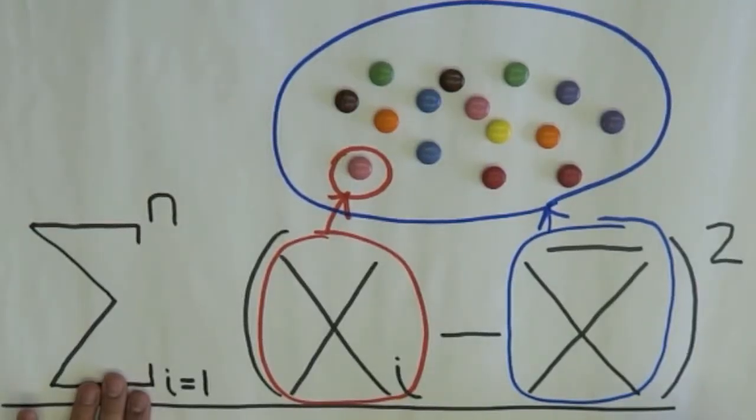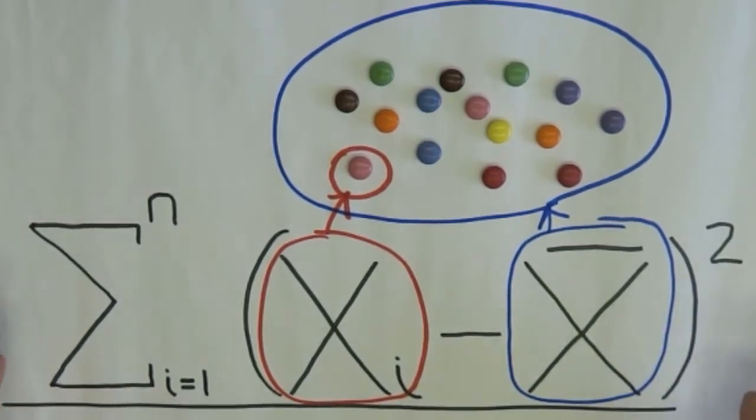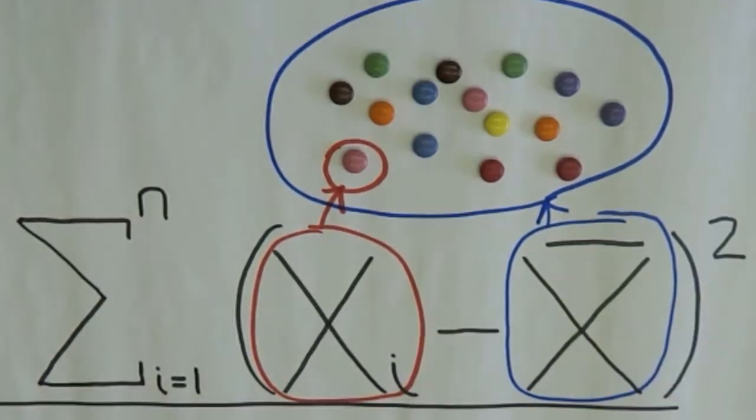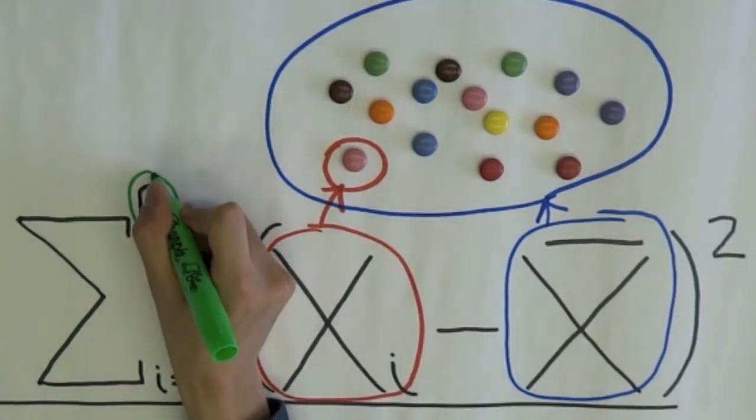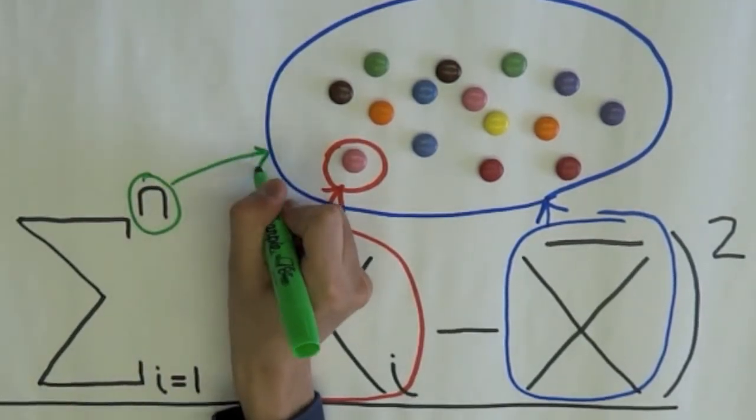Once we have found the difference between each data point and the mean, then we can add the squared results of each data point, which is represented by this. Here, n represents the number of data points.